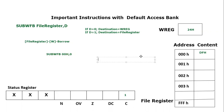So what is going to happen: the content of file register 00 hex which is DF, minus the content of the working register which is 24 hex, minus the carry flag which is 1. Starting the hex subtraction: F minus 4 equals 11, and 11 in hex is B.